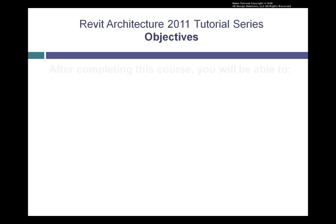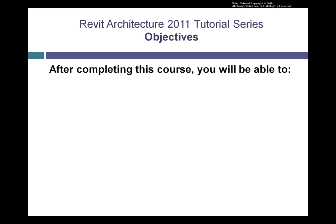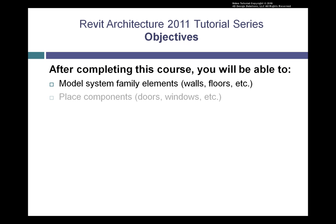After you have completed this entire course, you'll be able to model all of the elements that form the basis of a building model, including the system family elements that form the building shell and core — walls, floors, roofs, and so on. You'll also learn how to place other building components such as doors and windows, and how to modify components to create your own custom components.